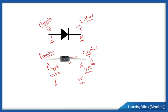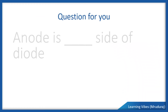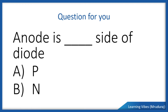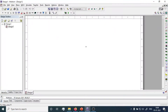Before moving ahead, there is a small question for you: anode is which side of the diode — P or N? Think quickly and answer in the comment section. We are going to learn the next thing with the help of a simulation tool. First of all, we will prepare the forward bias circuit of the diode, for which we will use several components.